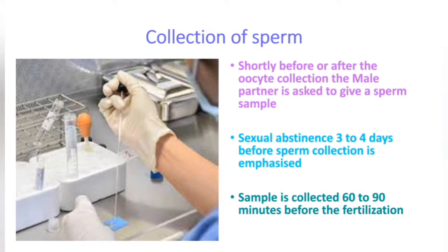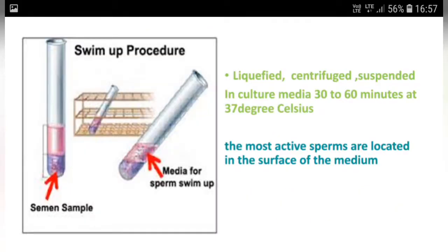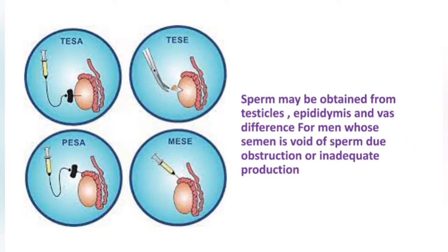The collected sperm is liquefied, centrifuged, and suspended in culture media for 30 to 60 minutes at 37 degrees Celsius. The most active sperms are located at the surface of the medium. Sperm can also be obtained from the testicles, epididymis, and vas deferens for men whose semen is void of sperm due to obstruction or inadequate production.